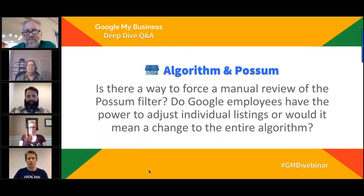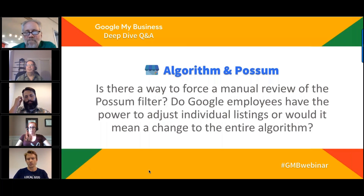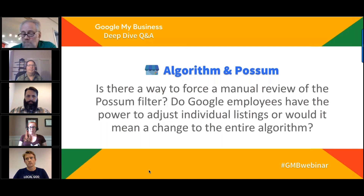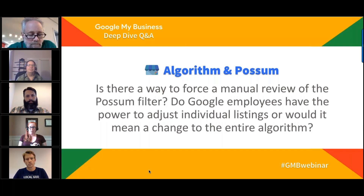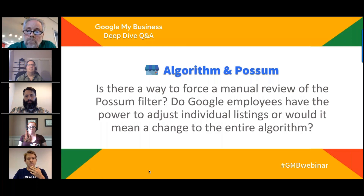Regarding the GMB forum: Joy notes that posts about filtering come in constantly, but there are hundreds of posts in a given week, and contributors can only spend about five to ten minutes per thread. You really can't diagnose or offer much helpful advice in that time. If a business is stuck in this situation, Joy recommends hiring someone to do a proper audit. You can get some good advice on the forum, but treat it with a grain of salt.